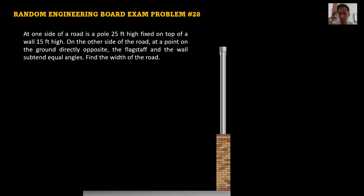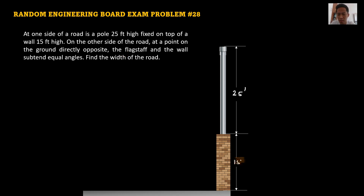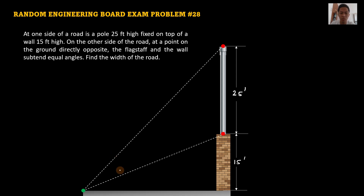So we have the wall and the flagpole is on top of the wall. Based on the problem, the pole is 25 feet — let's put 25 feet here. And then we have the wall that is 15 feet. On the other side of the road, that's the point on the other side. The flagpole and the wall subtend equal angles. So if this is angle theta, this is also angle theta.